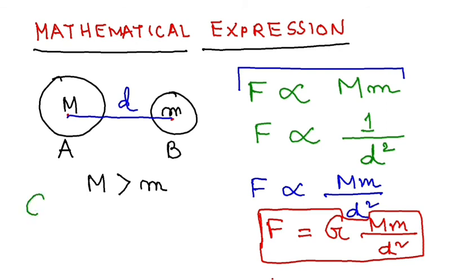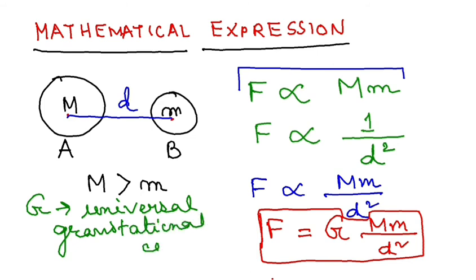Now what is G here? The capital G is called the universal gravitational constant. You have to understand about capital G in details. In the next video I will try to explain about capital G.